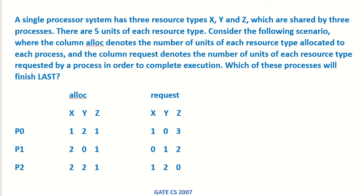A single processor system has three resource types X, Y, and Z which are shared by three processes. There are five units of each resource type. Consider the following scenario where the column 'alloc' denotes the number of units of each resource type allocated to each process, and the column 'request' denotes the number of units requested by a process in order to complete execution. Which of these processes will finish last?